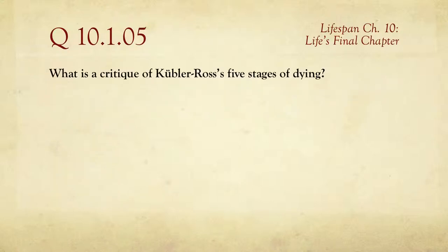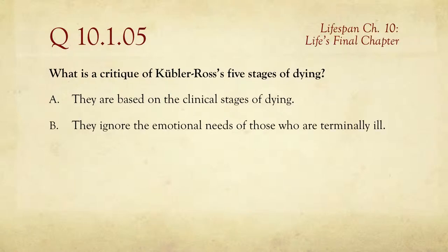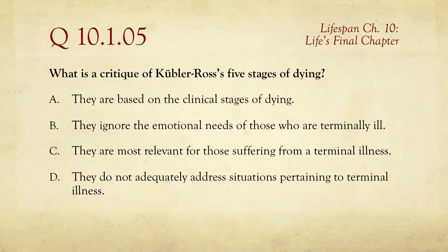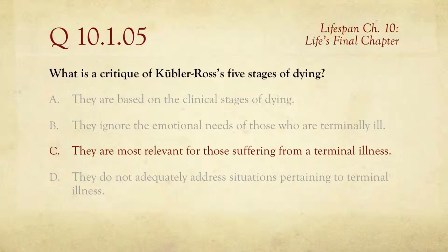Question number five: what is a critique of Kübler-Ross's five stages of dying? The choices are: they are based on the clinical stages of dying; they ignore the emotional needs of those who are terminally ill; they are most relevant for those suffering from a terminal illness; or they do not adequately address situations pertaining to terminal illness. The critique is that they're most relevant for people suffering from a terminal illness — they don't apply to getting hit by a bus, where you don't have time to go through the stages. Kübler-Ross's stages really apply to somebody told they have cancer with six months or a year to live. Other situations, it doesn't apply quite so well.